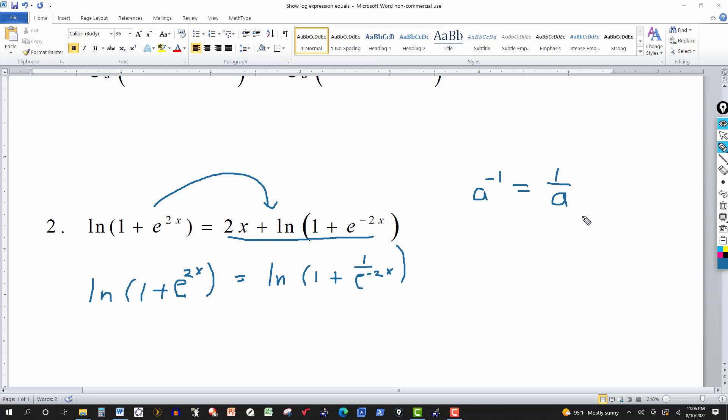That's just like a to the negative 1 is equal to 1 over a to the first positive power. If I have it the other way around, 1 over a to the negative 1, that's the same thing as a. So here, if I take this to the denominator, it just changes the sign. So I get this right here.